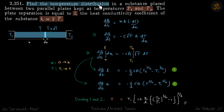Find the temperature distribution in a substance placed between two plates at T1 and T2, where the heat conductivity of that substance is proportional to root T.